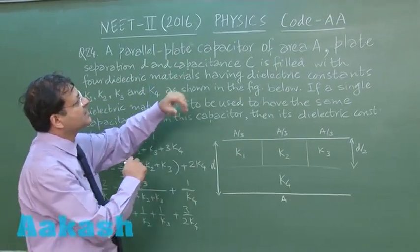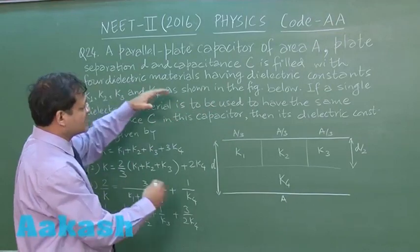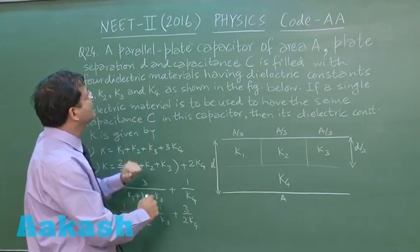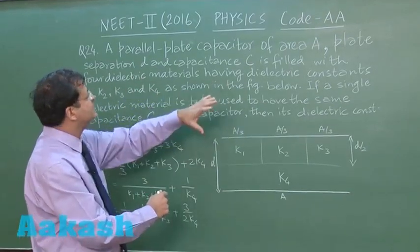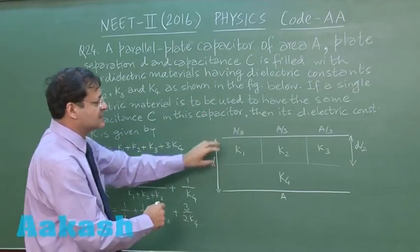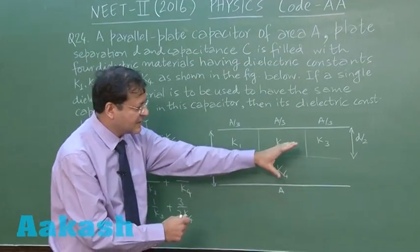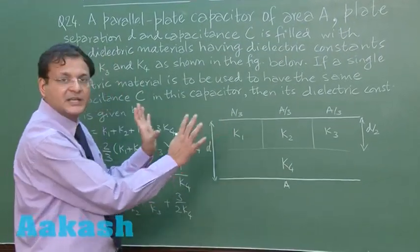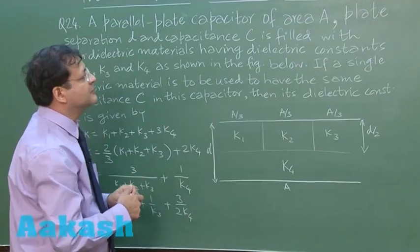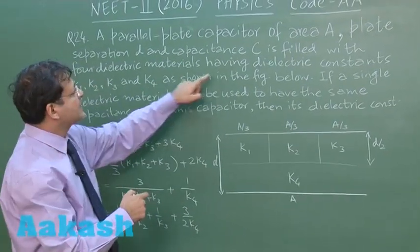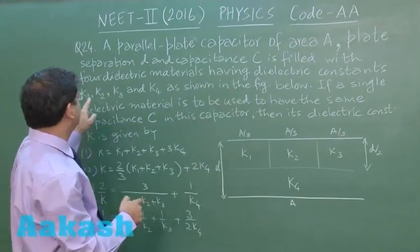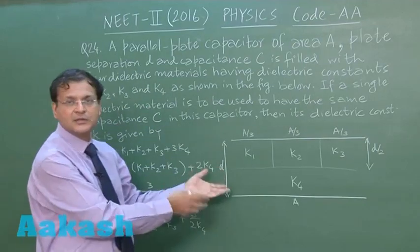It says that parallel plate capacitor of area A, plate separation D has been given to you, and capacitor C is filled with 4 dielectric materials as you can see here: K1, K2, K3 and K4. K4 is covering the entire lower portion but K1, K2, K3, they are the 3 equal parts covering the upper half. So with 4 dielectric materials having dielectric constants K1, K2, K3 and K4 as shown in the figure below.